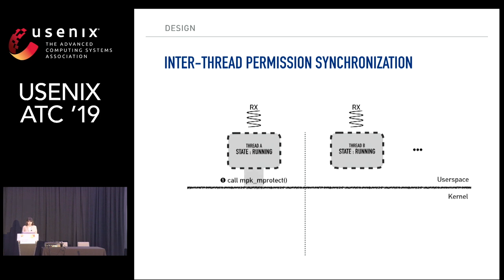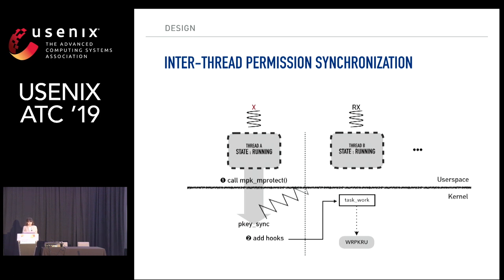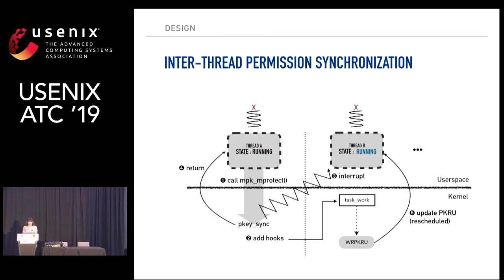This is the algorithm behind the permission synchronization API. When we call mpk_mprotect, which is our permission synchronization API, it calls a pk_sync system call added by us. The pk_sync function adds a hook to update the PKRU of other threads, sends an interrupt to preempt other threads, and then returns to user space. Finally, when the thread is rescheduled, the PKRU register will be updated and permissions will be synchronized.